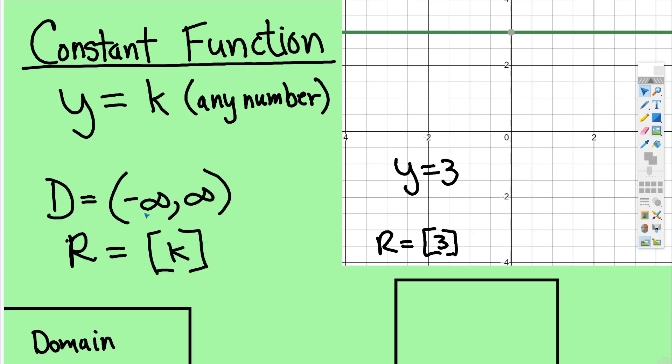The domain, notice, the x's go left and right infinitely in both directions, but the range is stuck at 3. It doesn't go higher than 3 or lower than 3. So the range, you'd use square brackets with just the 3 inside.